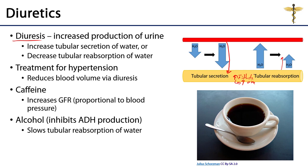Diuretics are a very common and simple approach to treat hypertension. If blood pressure is too high, we can lower blood volume, which helps reduce the effects of hypertension. Many pharmacological substances acting as diuretics can, through various mechanisms, either increase secretion of water or slow reabsorption of water.